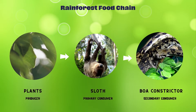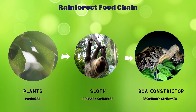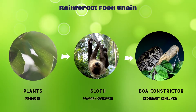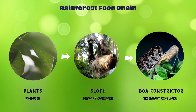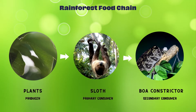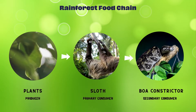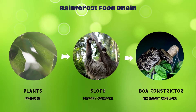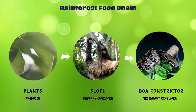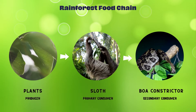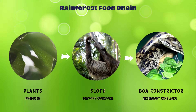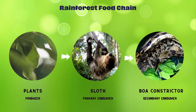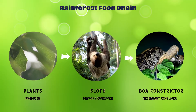Look at this rainforest food chain. It starts from plants. Plants are the producers in the food chain — they make food from photosynthesis. Sloth is a herbivore that eats plants, making it the primary consumer. Boa constrictor is a carnivore that consumes the sloth, making it the secondary consumer of the food chain.